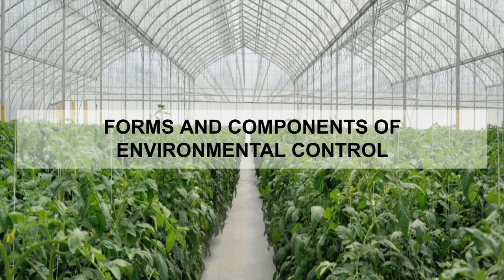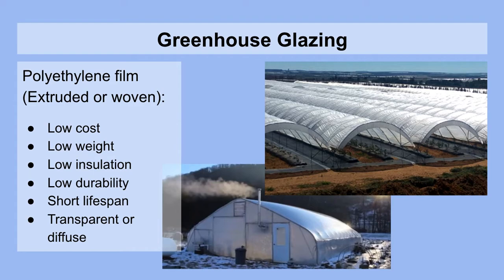Forms and components of environmental control. Greenhouse glazing is basically the material that is covering the majority of the greenhouse, usually the top portion or the roof. The first glazing we're going to be looking at is polyethylene film. It comes either extruded as a plastic film or woven, which is usually more durable. It's a very low cost glazing, low weight, usually provides low insulation on its own, has low durability and a short lifespan, and it can be transparent or diffuse, allowing in various degrees of light.